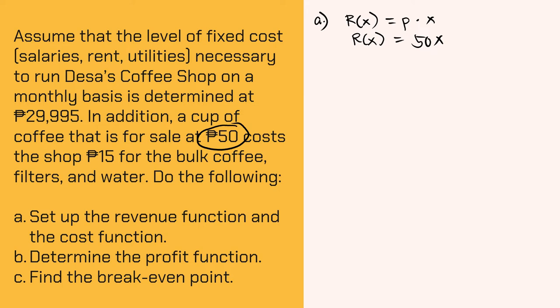Next, how about the cost function? Take note that the cost function equals the variable cost, or V of X, plus fixed cost of X. In the problem, the variable cost is given, which is P15. So 15 times the number of units sold, which is X, plus the fixed cost. What is the fixed cost in the problem? That is P29,995. Therefore, the cost function is C of X equals 15X plus 29,995.